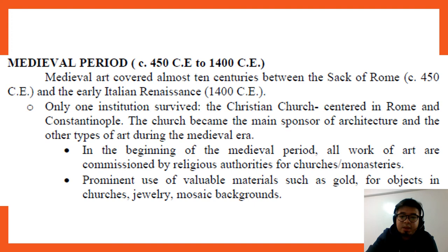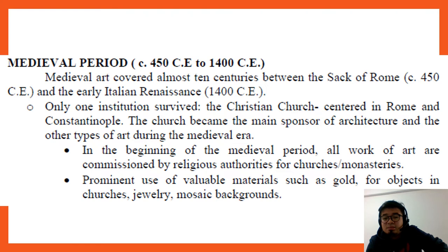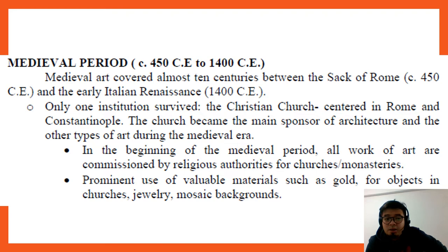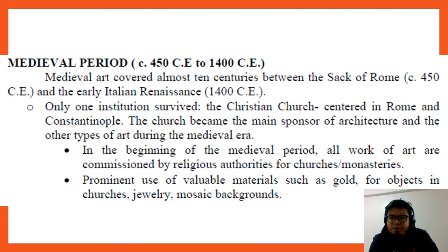During the medieval period, medieval art covered almost ten centuries — between the sack of Rome and the early Italian Renaissance. Only one institution survived: the Christian church. Centered in Rome and Constantinople, the church became the main sponsor of architecture and other types of art. All works of art were commissioned by religious authorities for churches and monasteries, with prominent use of valuable materials such as gold, jewelry, and mosaic backgrounds.